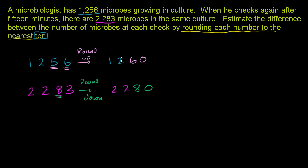Let's subtract the first check from the second check to get a positive number. So if we subtract 1,260 - let me just copy and paste it.